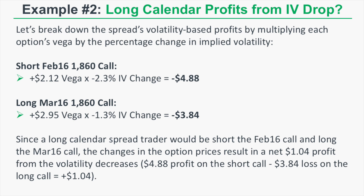We actually profited as implied volatility decreased because the short option's implied volatility decreased more than the long option's, so the short option's value fell faster. Since the spread only made $0.55 overall, we didn't keep all the volatility-based gains because the stock price made a large movement away from our calendar strike of 1860, creating directional losses that partially offset the profits from the implied volatility contraction.